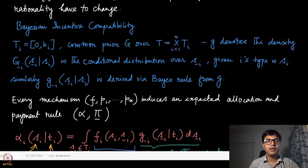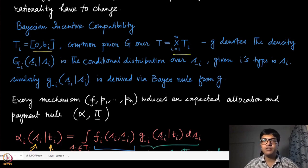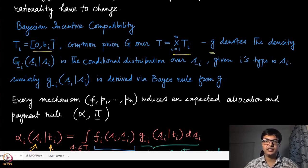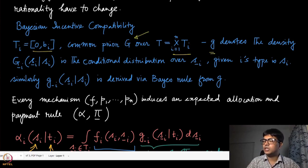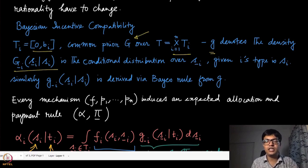We are going to define BIC in the context of single-object allocation. Assuming that the type sets are intervals between zero and b_i for agent i, the common prior is defined over the type profile as a Cartesian product over all types of all agents. Lower case g denotes the density of that common prior distribution, which is a CDF. g_{-i}(s_{-i} | s_i) denotes the conditional distribution over s_{-i} — the type vector of all other agents — given agent i's type s_i.